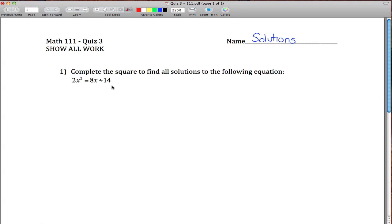Quiz 3, Math 111, solutions. First problem we're asked to complete the square to find the solutions to this equation. I think the first thing I would do is subtract 8x from both sides. The reason why is when you're completing the square you need all the x's on the same side of the equation.